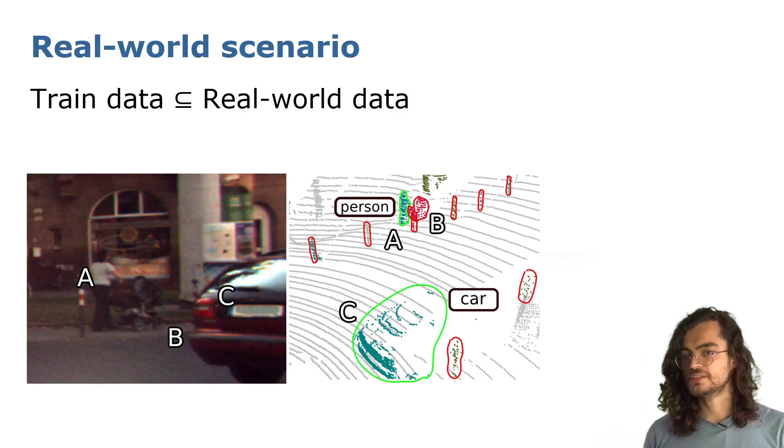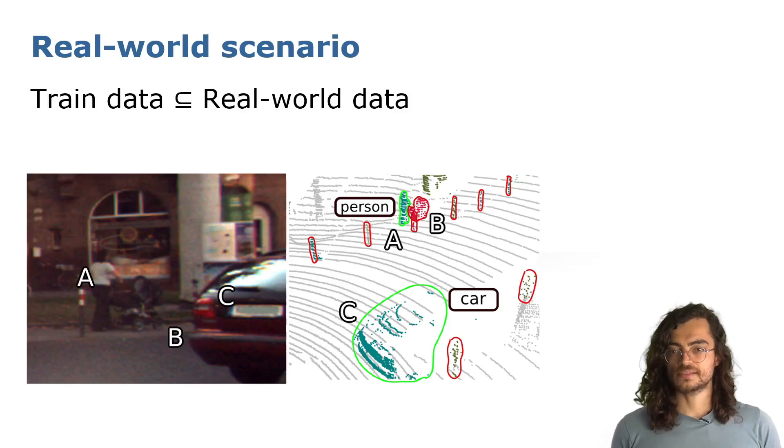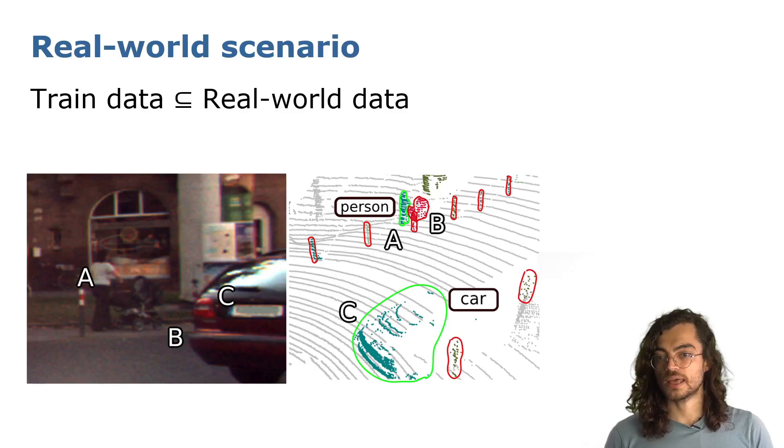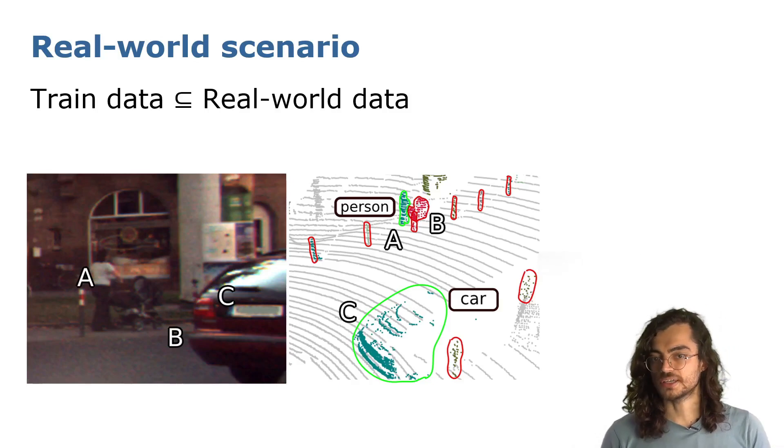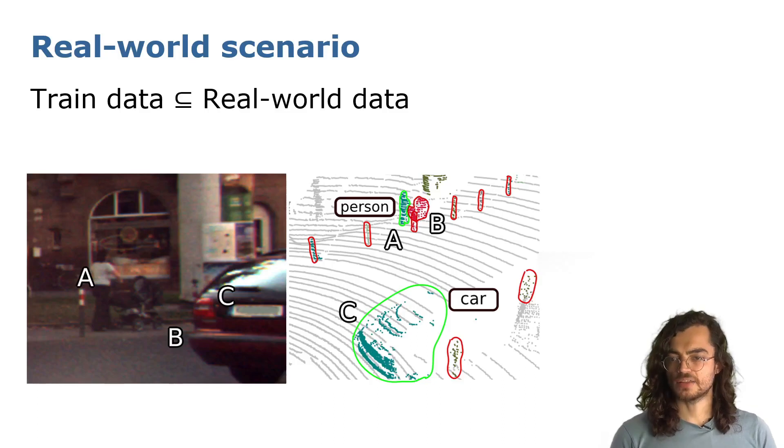For example, in this image, instances A and C correspond to person and car, which are classes usually labeled and would be seen by the model during training. However, the baby stroller B is not labeled due to a lack of examples and would not be seen by the model during training, but is still highly relevant.